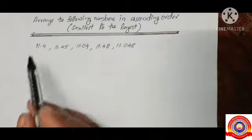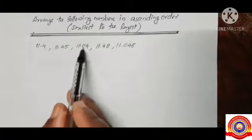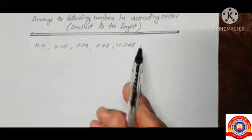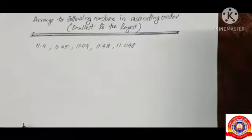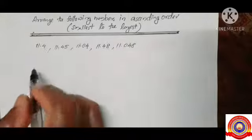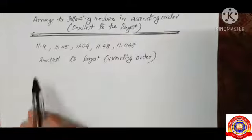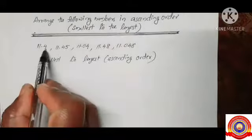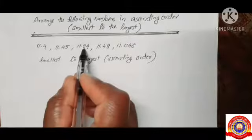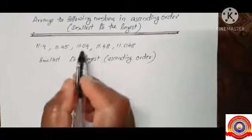Students, look at these numbers: 11.4, 11.45, 11.04, 11.48, and 11.048. We have to write the numbers from smallest to largest. The decimal part of the numbers at the tenths place is: 4, 4, 0, 4, and 0.